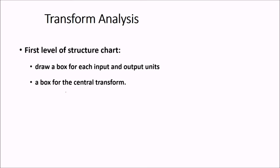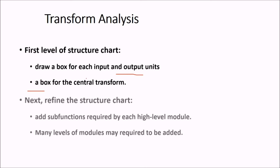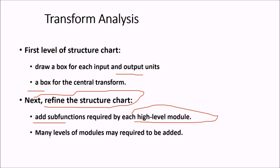First level of structure chart, we draw a box for each input and output units. We draw a box for central transform. Then we try to refine this structure chart. Now we add sub-functions which are required by each high-level module and there are various levels. So many levels of modules may be required to be added.